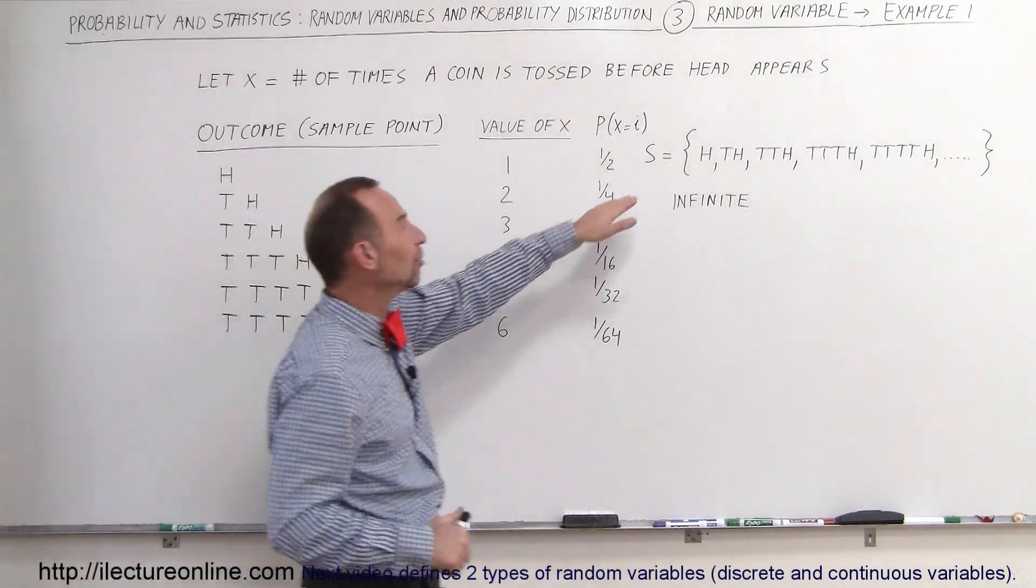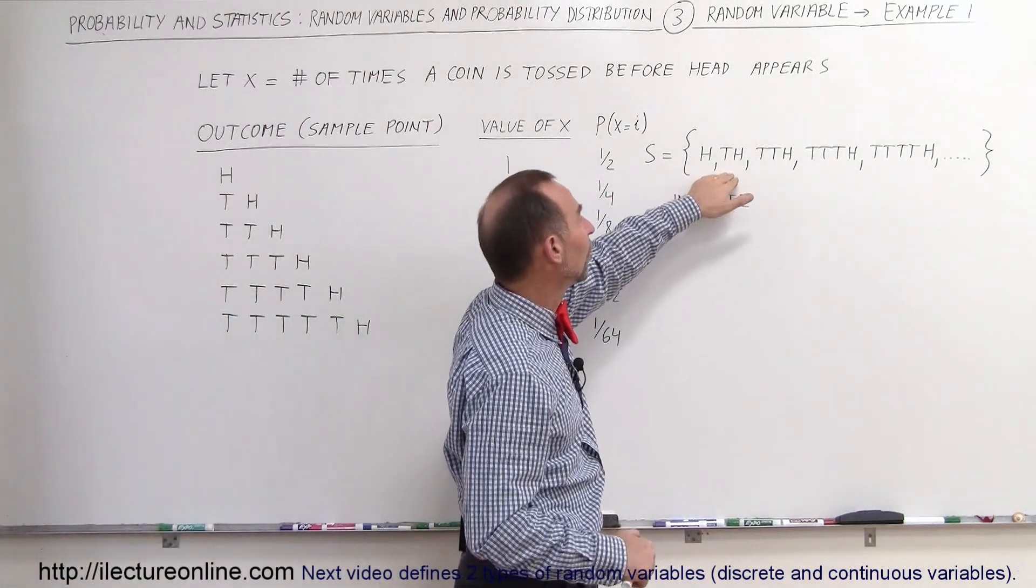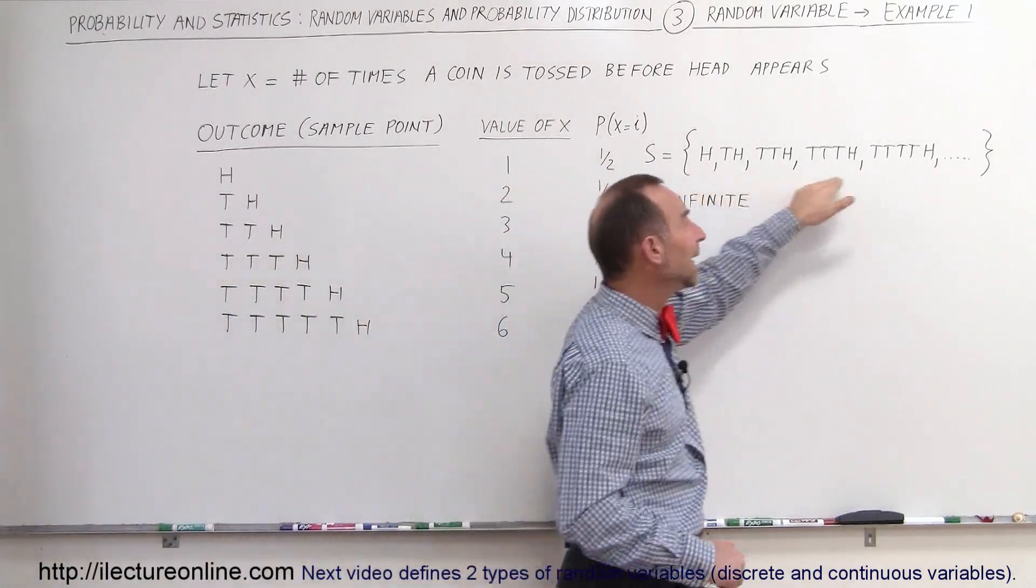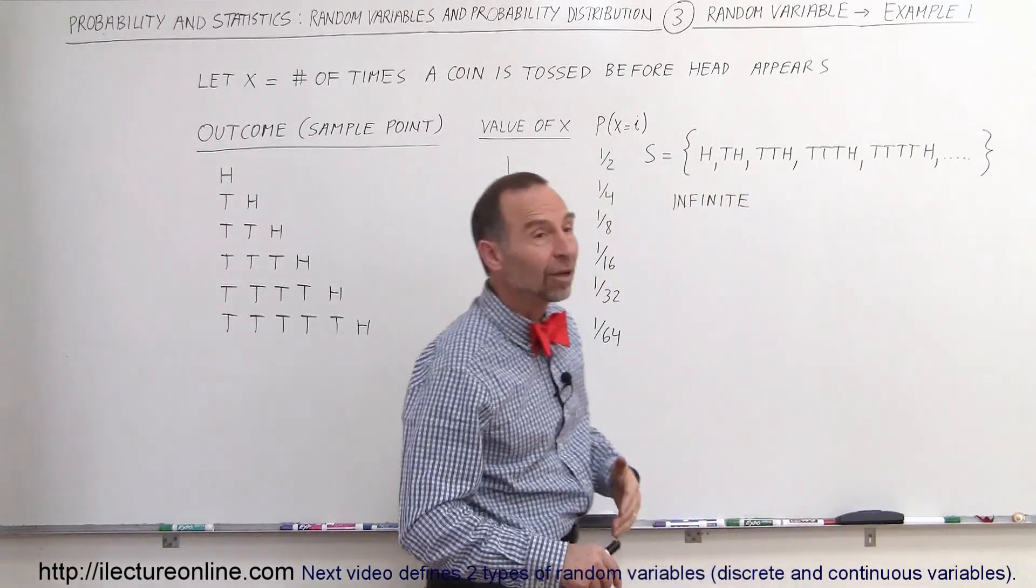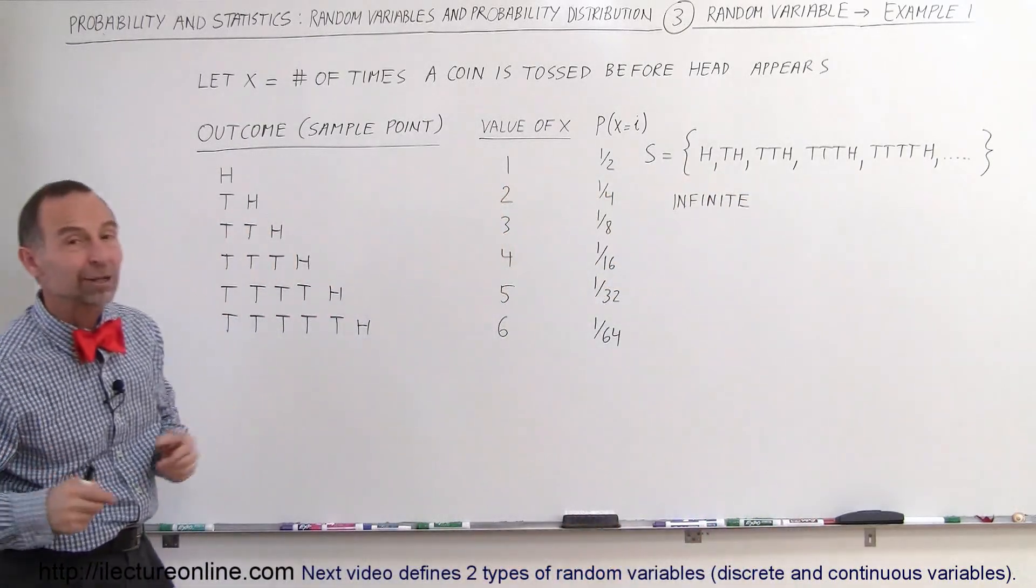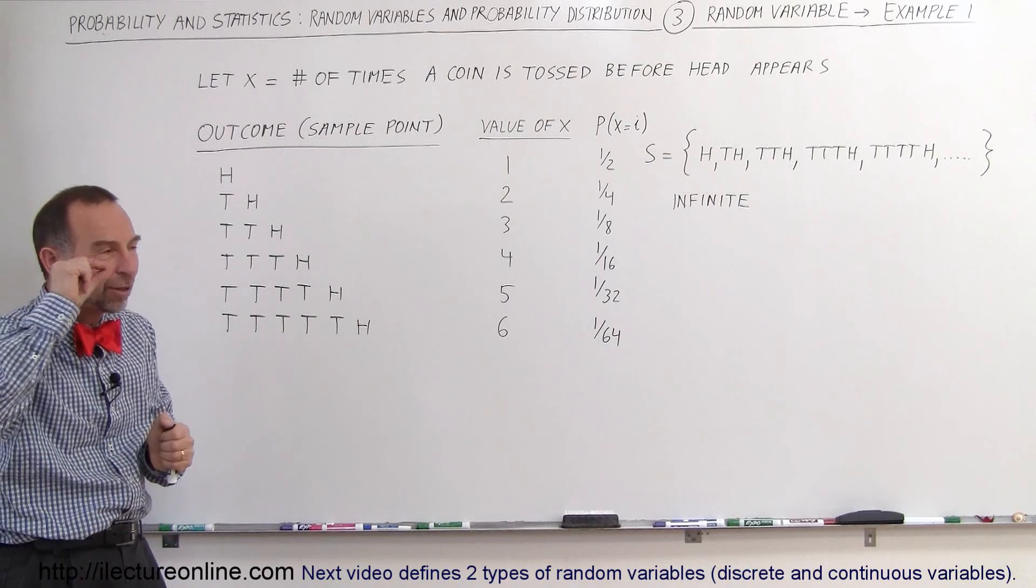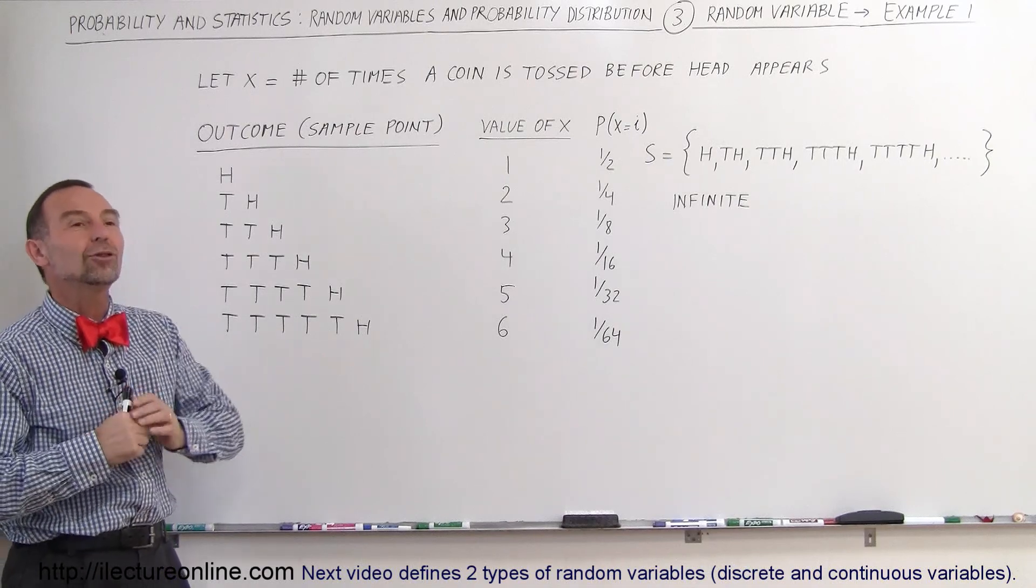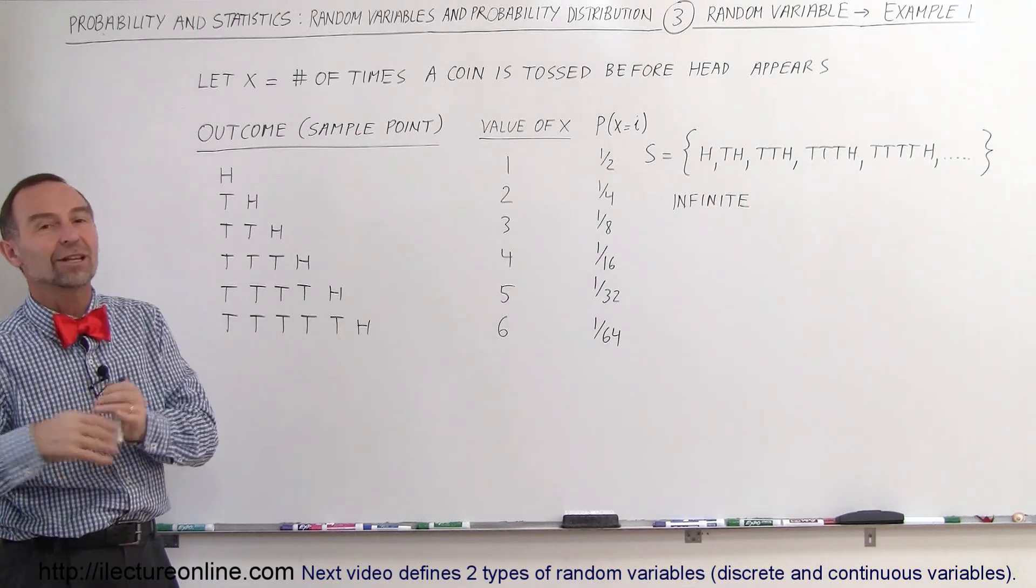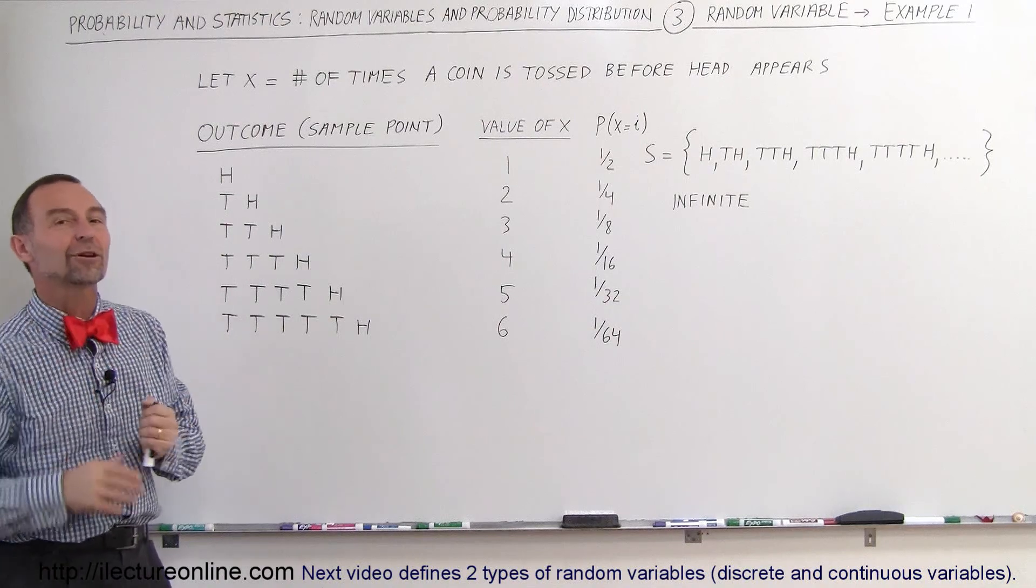And therefore, the sample space of the number of sample points will be an infinite sample space, because mathematical probability tells you that even though the probability is very, very tiny, it could be that you do it a million times, a billion times, and each time it comes out tails before it comes out heads.